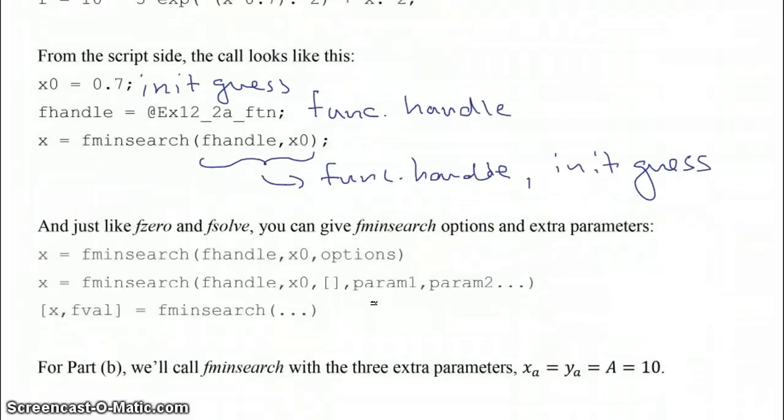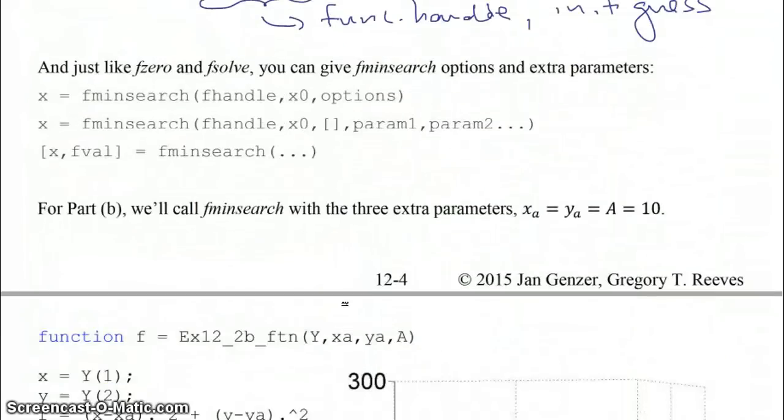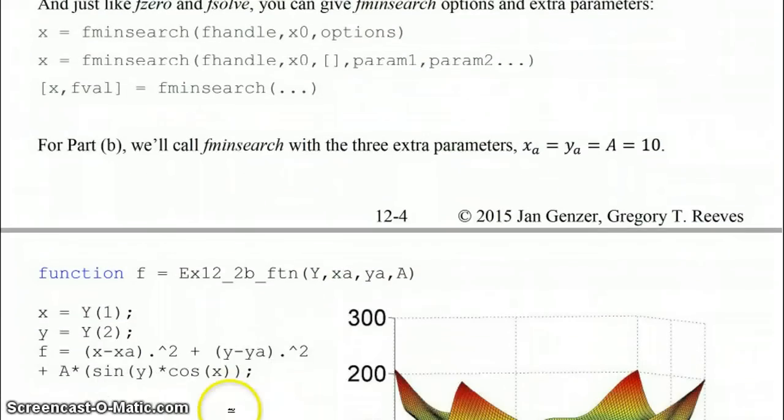For part B, we're going to call fminsearch, and we're going to make use of the fact that you can pass extra parameters to it by passing these three extra parameters: xa, ya, and capital A, all equaling 10 in this case. So the way that that function is going to look will be like this. I put this figure over here, which caused this line here to wrap onto the next line, at least in the lecture notes, but that's obviously not the way you would write it in MATLAB. So here we have a function where its first input is some vector, capital Y, and then we have these three other inputs here, but its output is a single scalar value, f. The first thing we're going to do is we're going to unpack our capital Y vector into x and little y, and then define what our function is, f.